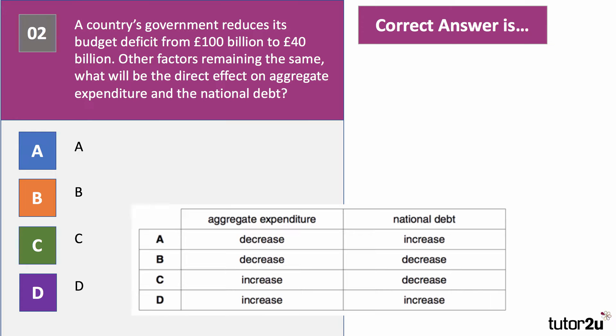The answer to question two is A. Aggregate expenditure will fall because we're cutting the budget deficit — the government is still injecting money into the economy, but not as much as before. Cutting the deficit is a form of fiscal austerity or deflationary fiscal policy. However, the national debt will continue to increase — they're still borrowing 40 billion pounds. The national debt is the accumulated cumulative level of borrowing yet to be repaid, so it will still go up.